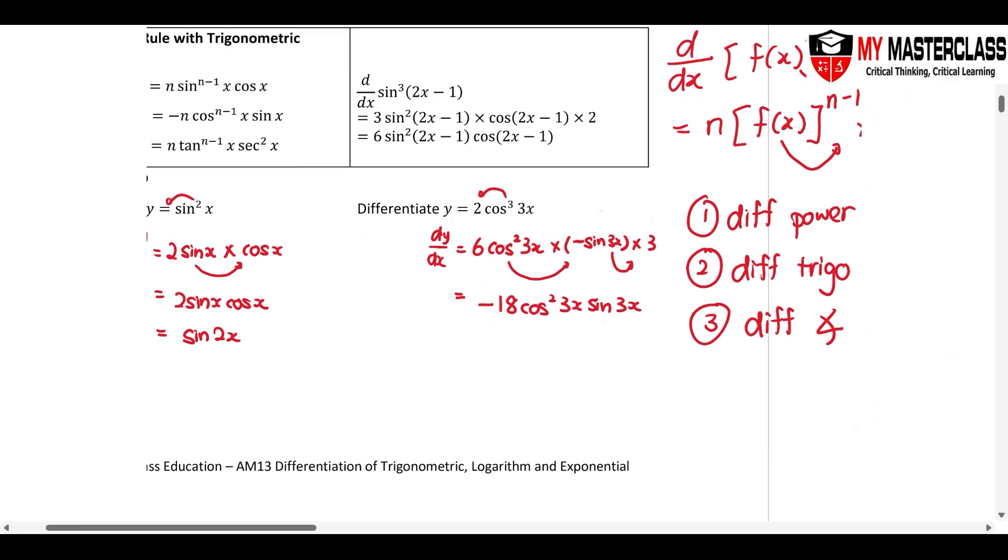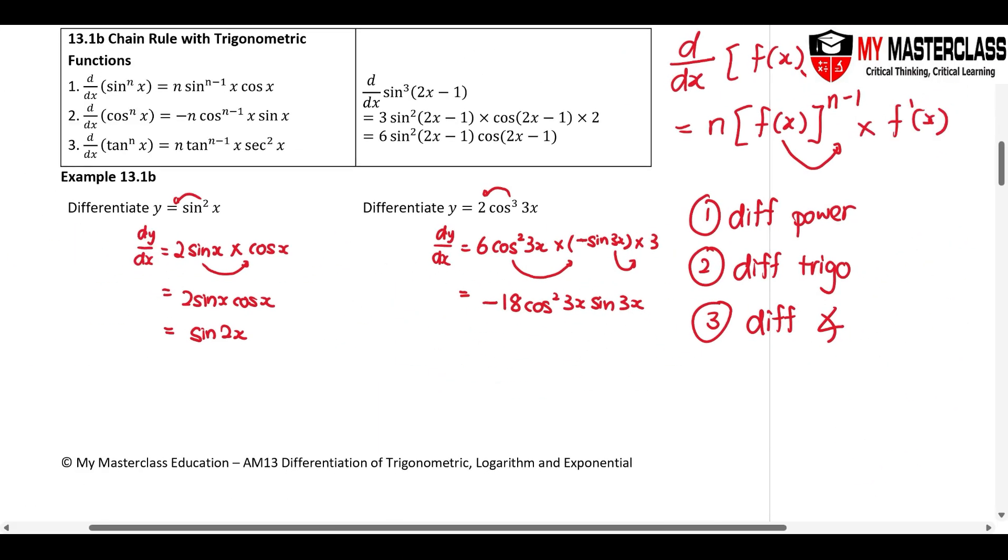So if you see a chain rule, add one more step in front which is differentiate, use the power law first for the chain rule. Then you differentiate the trigonometry. Then you differentiate the angle.